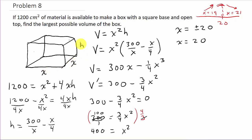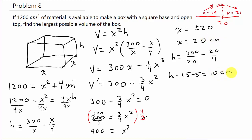Now I need h. Using h = 300/x − x/4 with x = 20: h = 300/20 − 20/4 = 15 − 5 = 10 centimeters. They asked for the largest possible volume, so V = x² times h = 20² times 10 = 400 times 10 = 4000 cubic centimeters.